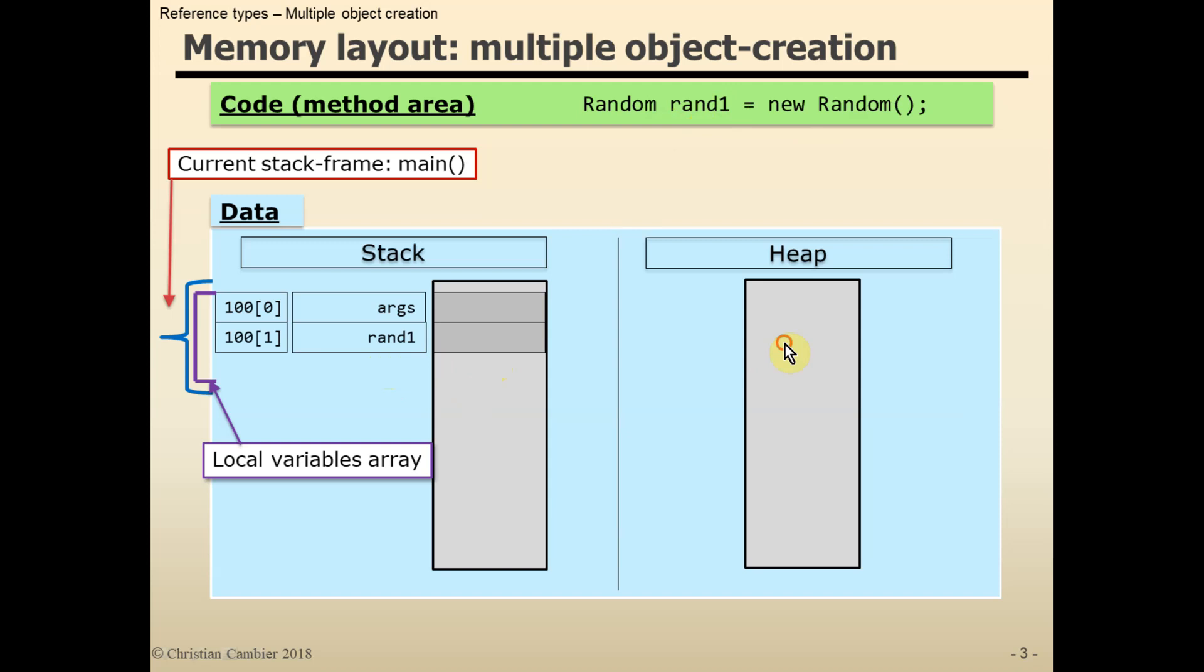Then the creation of the object on the heap at fictional address 1000, and finally the assignment of address 1000 of the object to the local variable rand1.